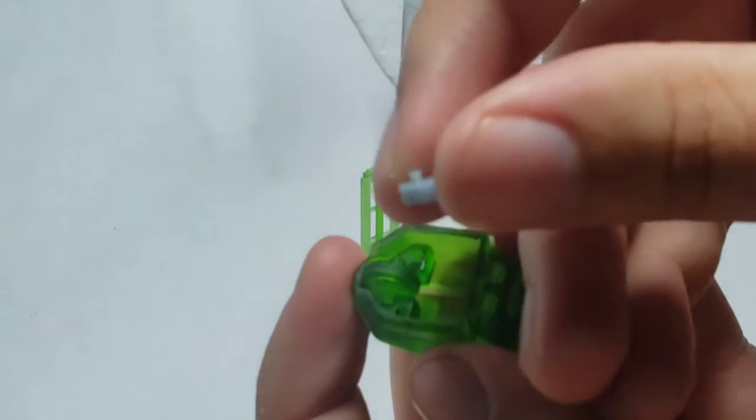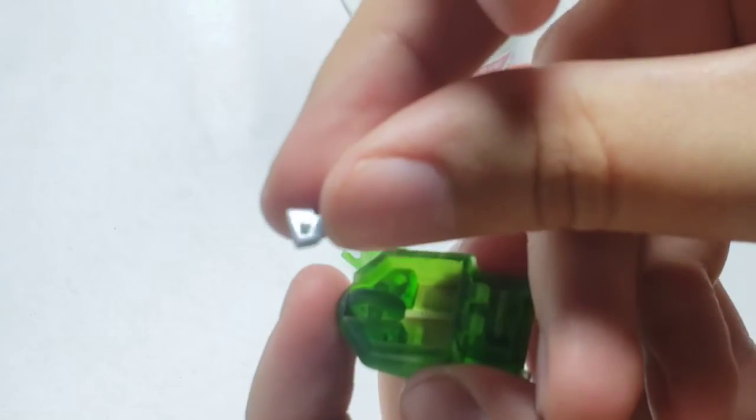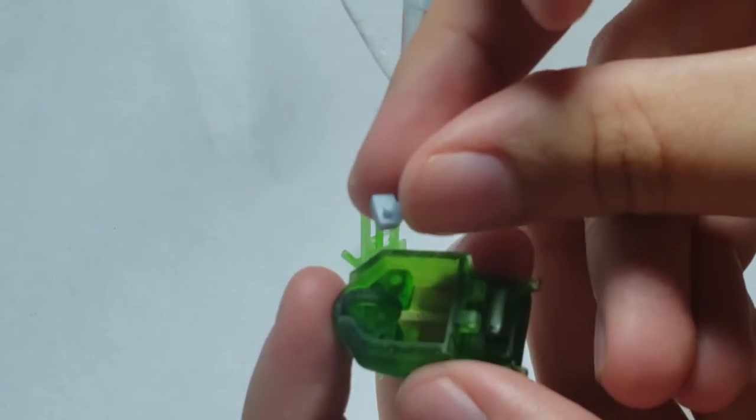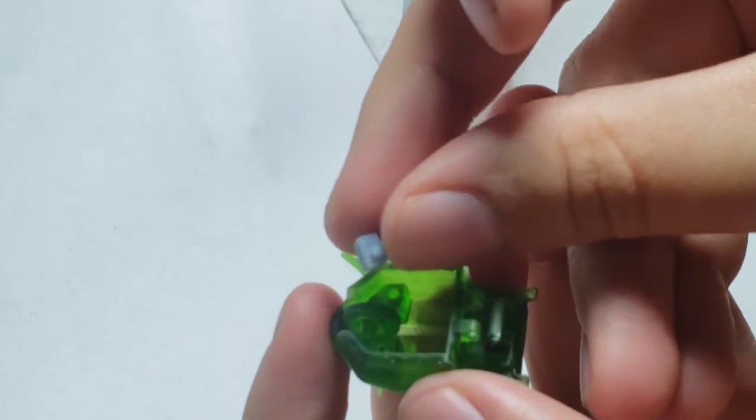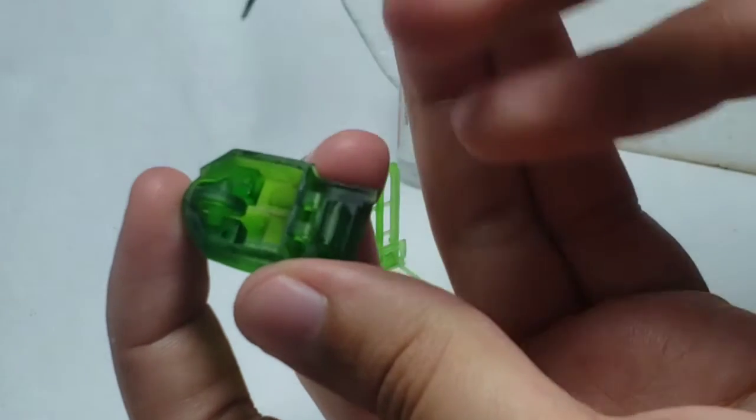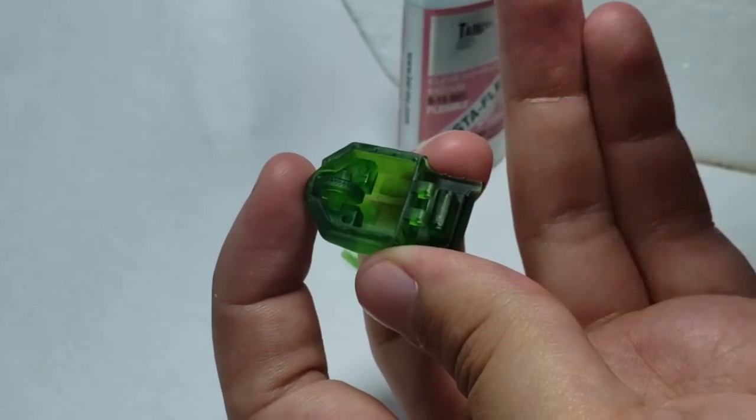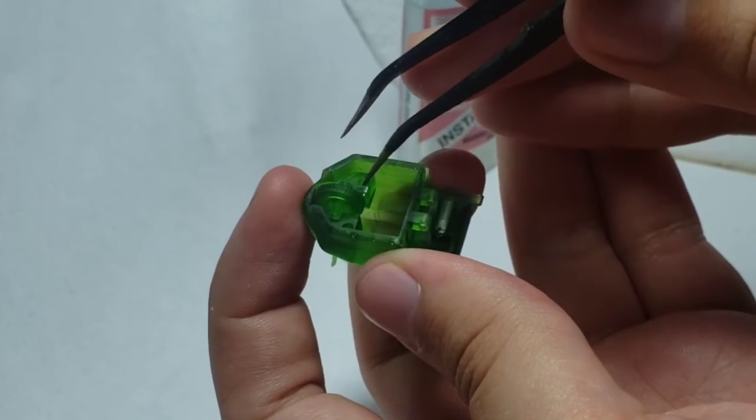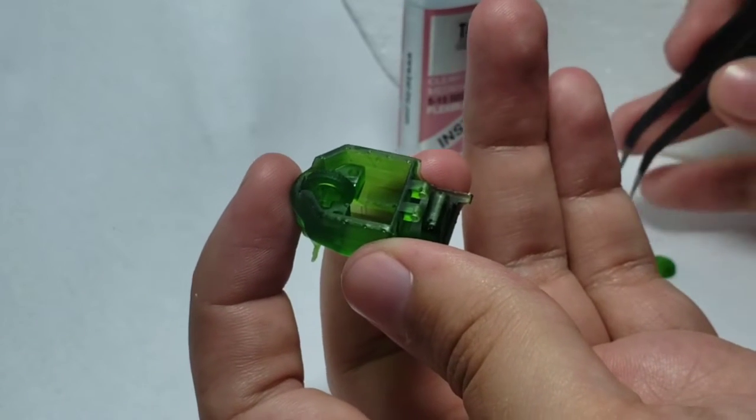Then get the wheel blocks right here. Make sure you put a little bit of glue inside these holes here before you install these blocks.